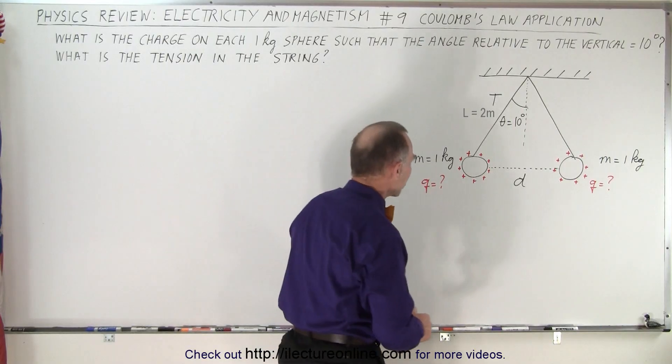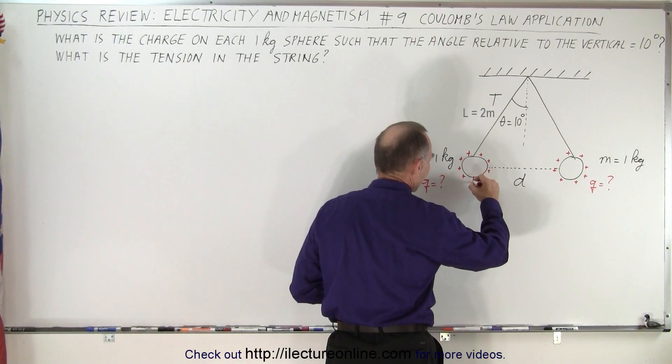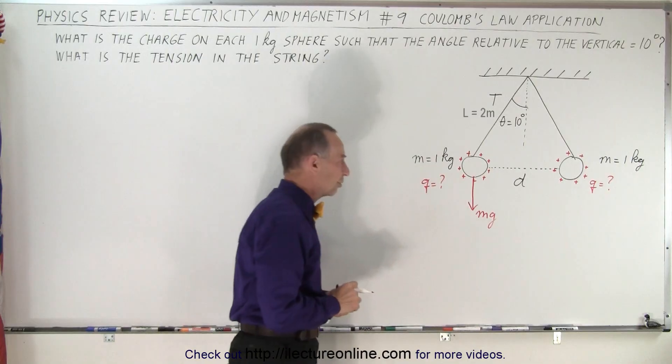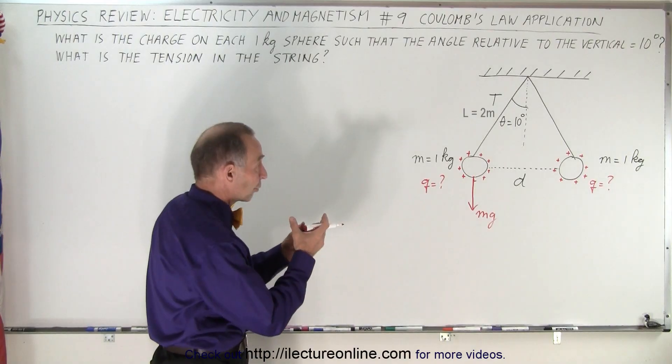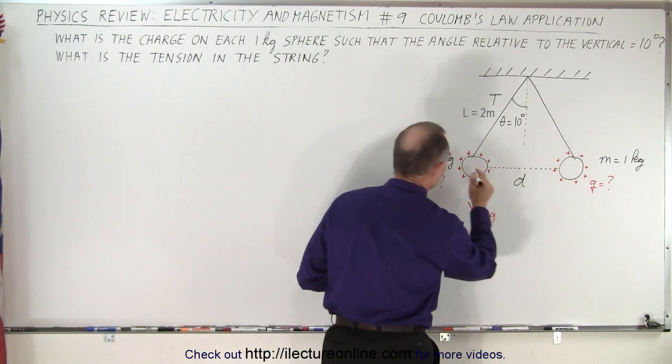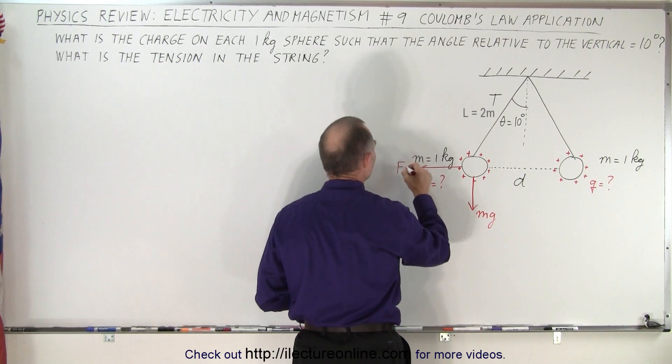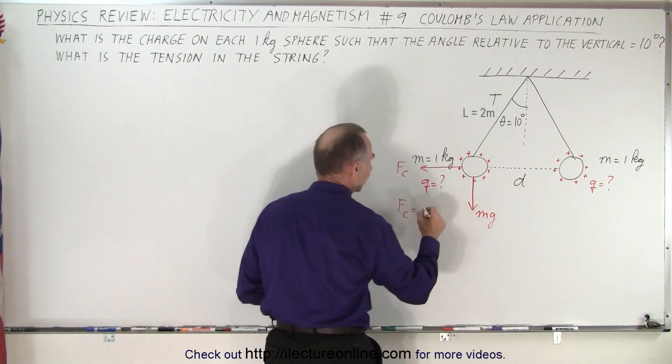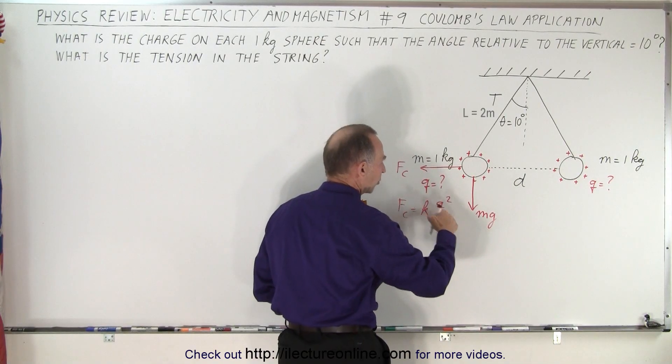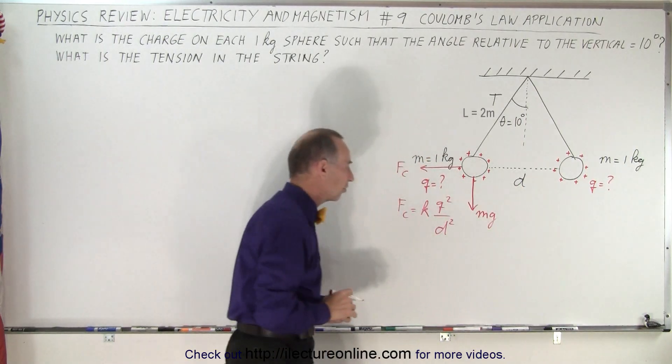We need to have the force vectors drawn and the first thing we might think about is since they have a mass of one kilogram that will be a force downward equal to the force of gravity mg. And then we realize that there's the force of repulsion between them. So this one will feel a repulsive force from this charge. That force will be equal to the Coulomb force where the Coulomb force is going to be equal to K times Q squared divided by D squared.